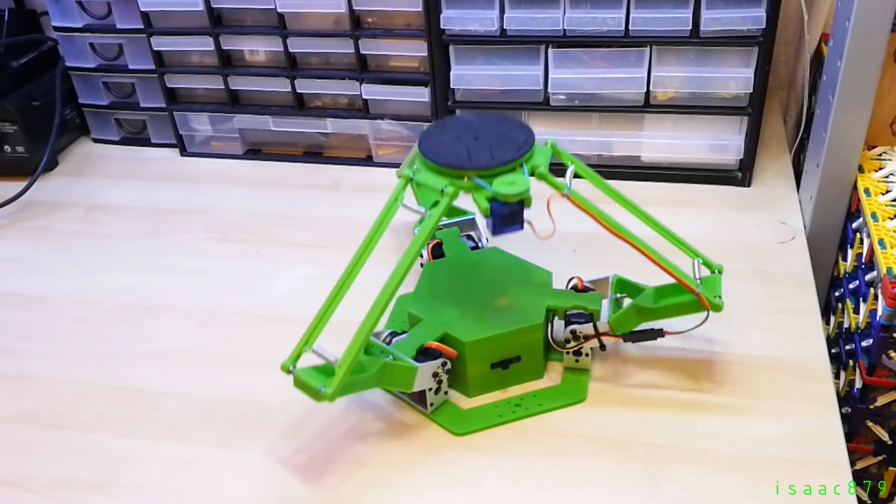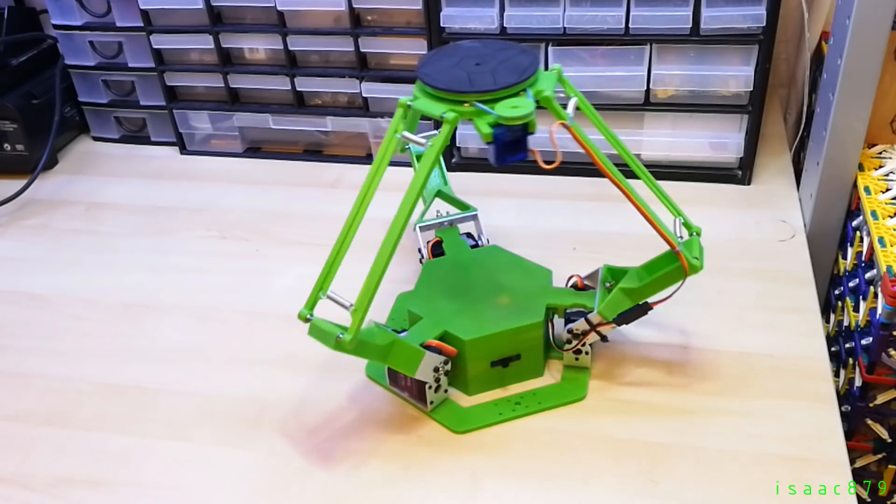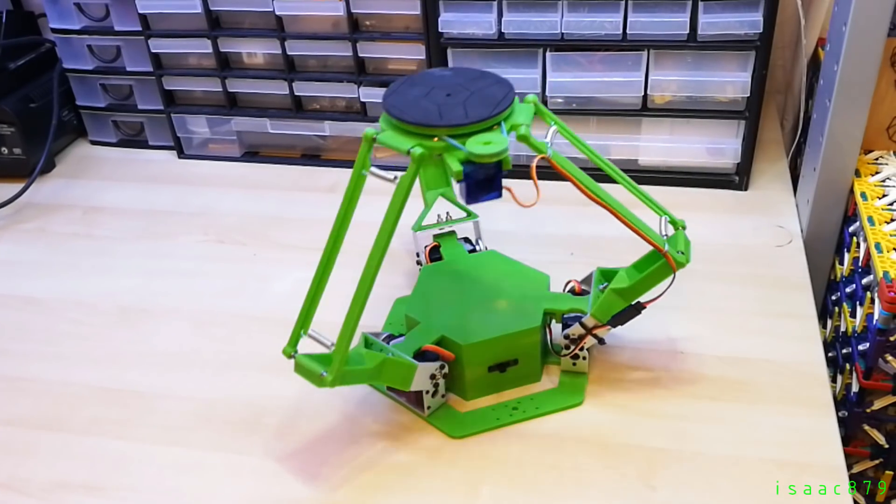This is my completed Delta robot. Here you can see it going through some test movements in the X, Y and Z axis and then drawing some circles in the air.